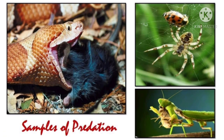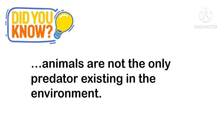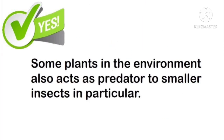Examples of predation include the tiger and deer, snake and mouse, spider and beetle, and mantis and small insects. But did you know that animals are not the only predators existing in the environment? Hindi lang mga animals ang predator or carnivorous — because some plants in the environment also act as predators to smaller insects. May mga plants o halaman sa ating kapaligiran na kumakain ng mga maliliit na insekto.